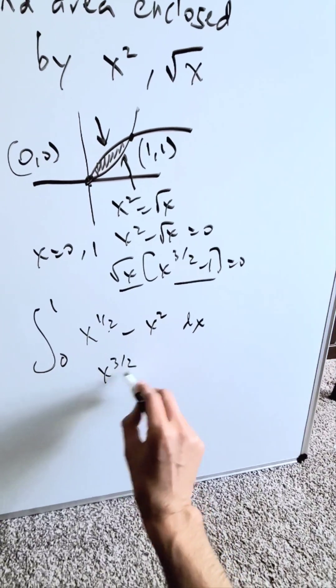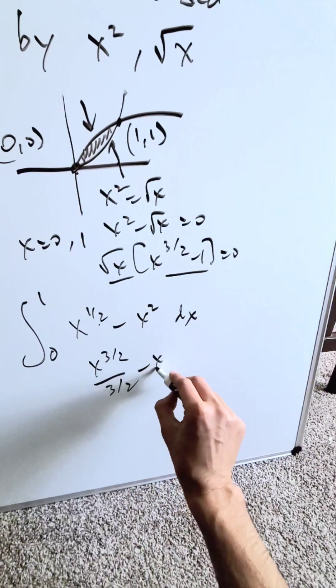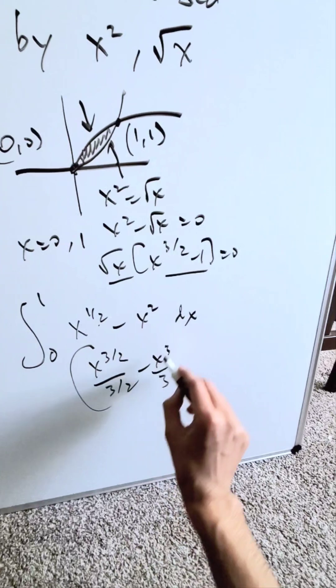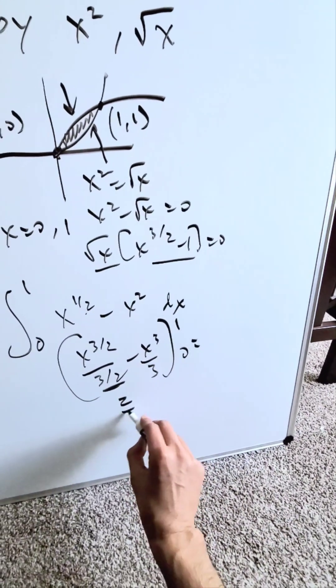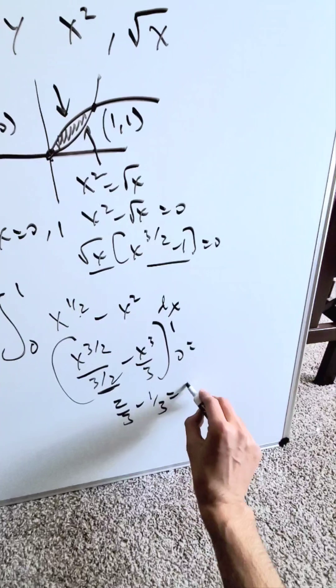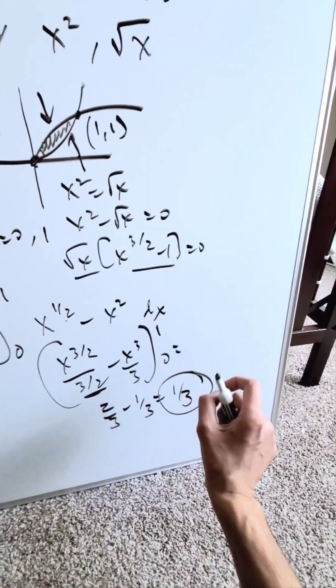When you integrate this, you have x^(3/2) over (3/2) minus x³ over 3. You're putting 1 and 0 in places of x. When you do it and flip this around, you'll have 2/3 minus 1/3. Your end result, your area is 1/3.